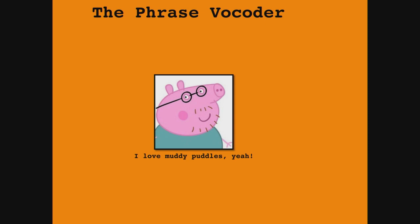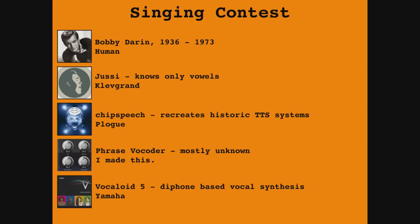Now a brief review of available singing synthesizers. First, Bobby Darin — an actual human who performed Splish Splash. Then Jussi, from a Swedish company called Cleftgrant — not actually a text-to-speech system but it sounds cool and expressive. Chip Speech from Ploak in Canada recreates historic TTS systems in a musical context — it has about 10 or more historic speech synthesizers including Klatt synthesizers, formant synthesizers, and LPC-based synthesizers. It's one of the few software tools I actually bought.